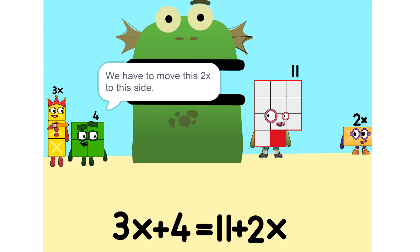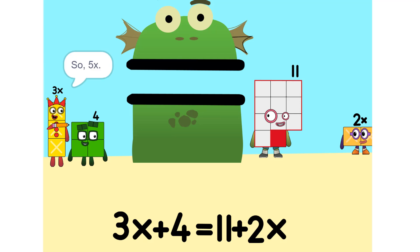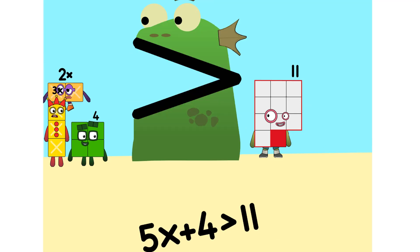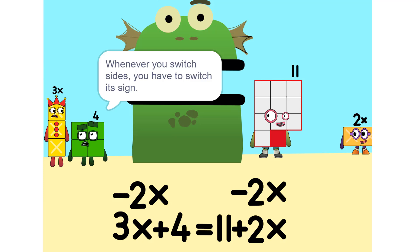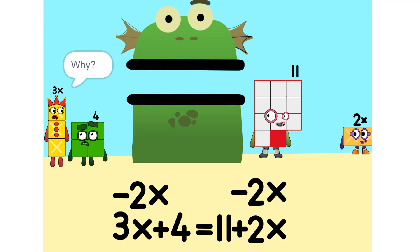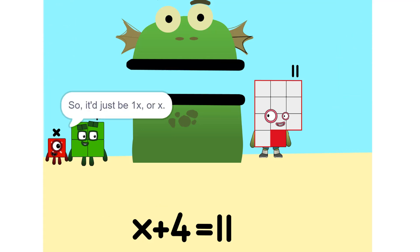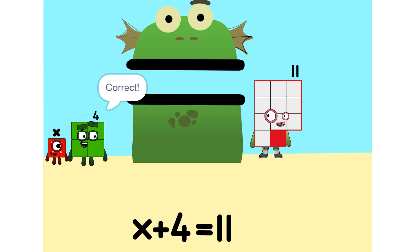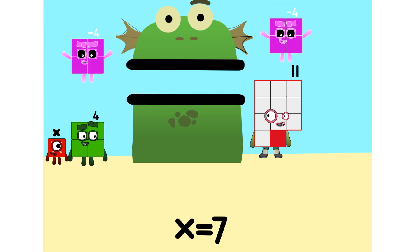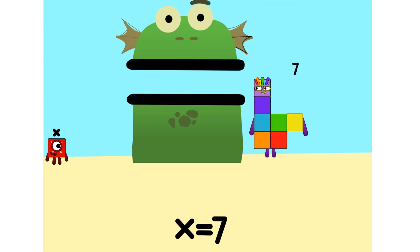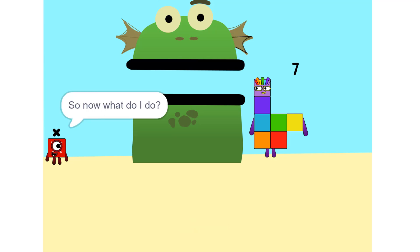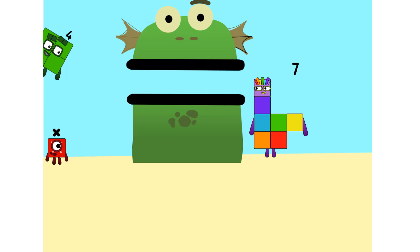Now we have to move things around. We have to move this 2x to this side. So 5x. Whenever you switch sides, you have to switch its sign — so if it's positive, it becomes negative and vice versa. Why? Think of it this way: you're subtracting 2x from each side. So it'd just be 1x, or x. Correct. Now do the same with 4. 11 minus 4 is 7. So now what do I do? Oh — x equals 7.